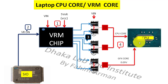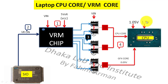The graphics core 0.9 volt will also enter into the CPU, and the CPU will also get 1.05 volt from the PCH. Then the CPU will get the RAM voltage — this is the DDR3 voltage at 1.5 volt — and there will be another voltage of 1.8 volt, which is called the PLL voltage.